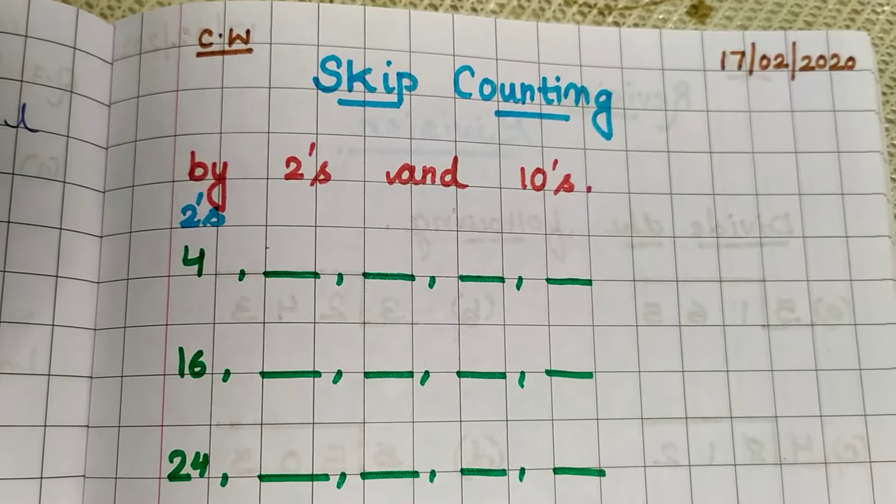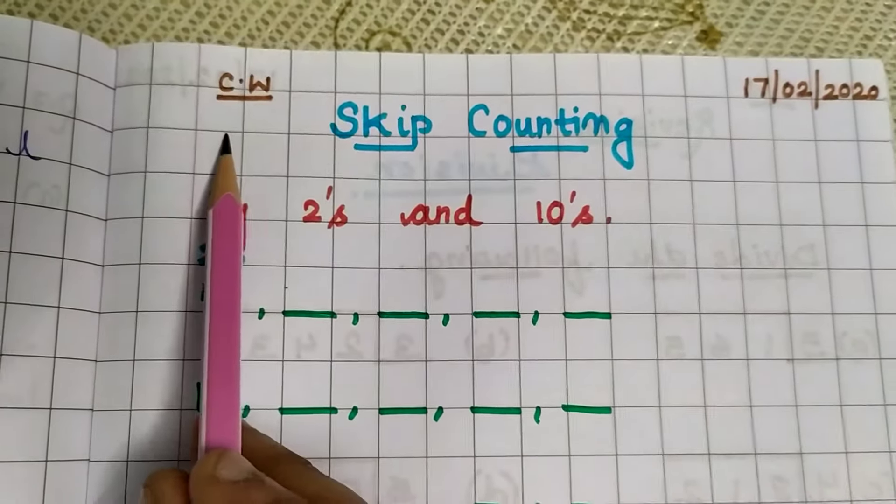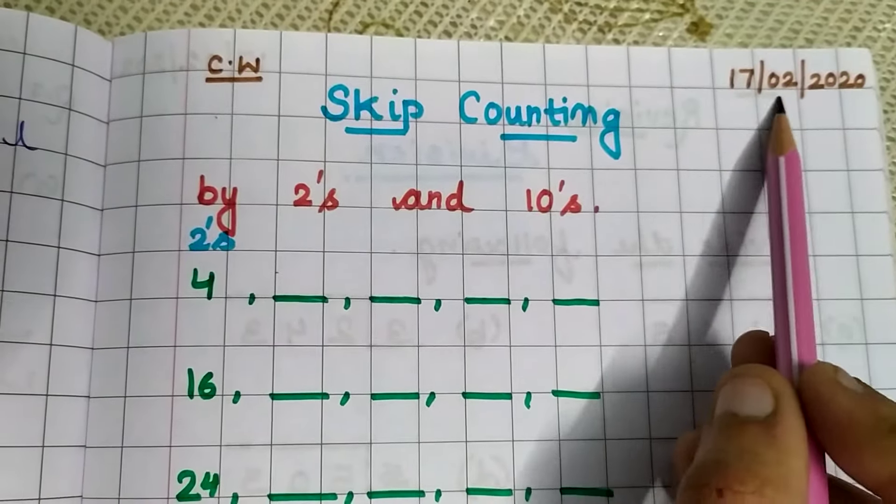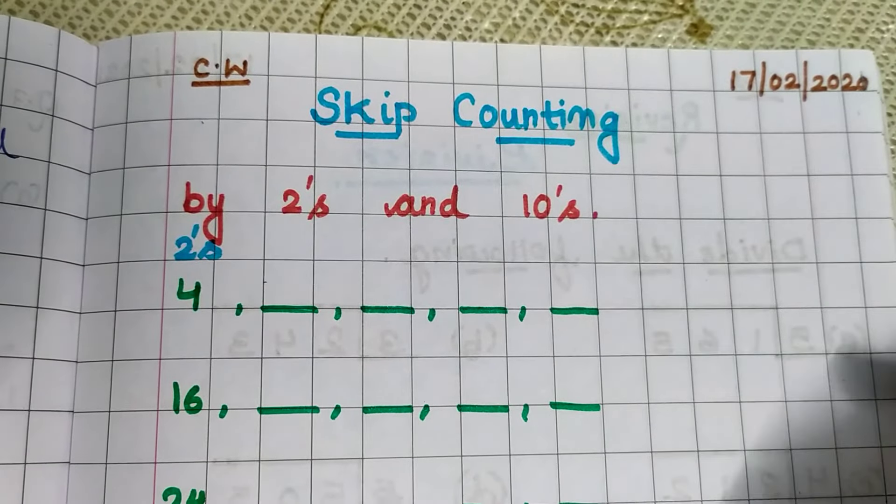Class, this is your maths period. Take out your maths notebook. Write down classwork and put today's date, 17th of February 2021.